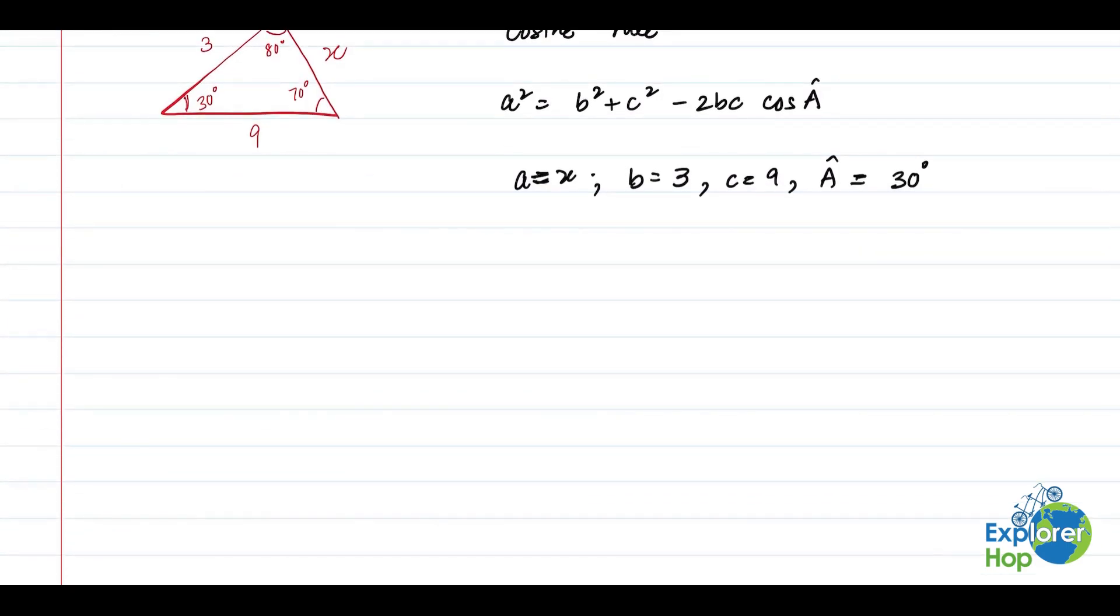So now what we'll do is we'll just substitute everything into this equation that we have. And we would get x squared equals 3 squared plus 9 squared minus 2 into 3 into 9 cos of 30. And obviously we'll be using a calculator to further simplify it down.